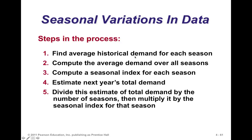Here's how we do it: find the average historical demand for each season. If I have 4 years of data looking at fall, winter, spring, and summer, I take each season — all 4 springs, 4 winters, 4 summers — and average them. That gives me an average demand for each season. Then I take the overall demand and compute the average across all seasons and all years. If I divide the average seasonal demand by the overall average, I get a seasonal index for each one.